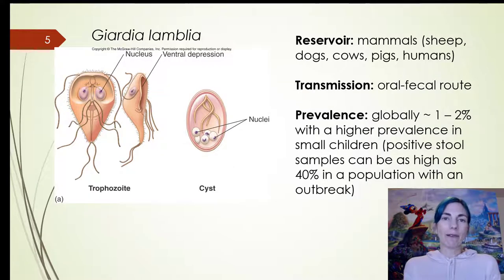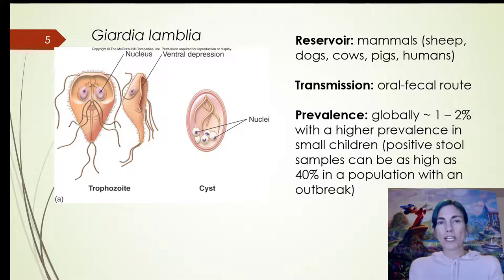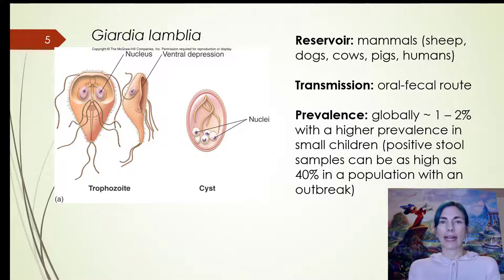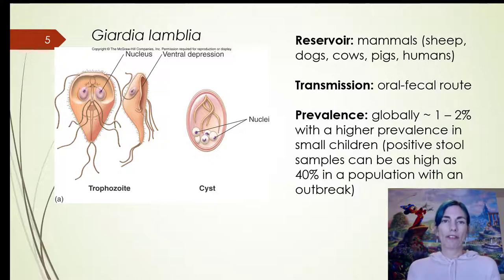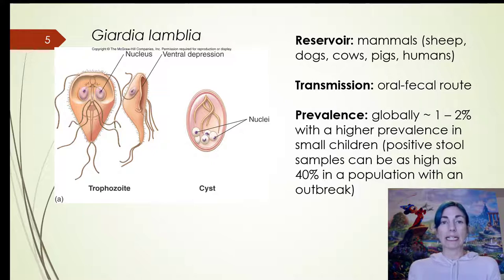Giardia comes in a couple of species; the one shown here is Giardia lamblia. The reservoir is varied but it's largely considered a zoonotic disease — found in cows, sheep, pigs, dogs, and humans. Transmission is oral-fecal: portal of entry is the mouth, portal of exit is feces, and it's global. The global prevalence is around one to two percent, with a much higher prevalence in children and in underdeveloped countries.